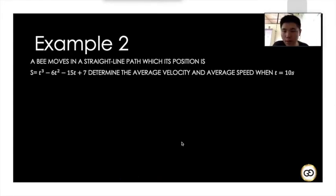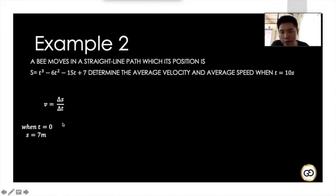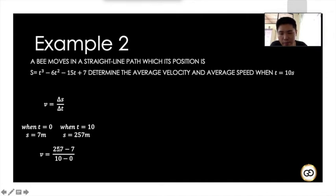Now let's look at another example — you can pause and try it yourself first. A body B moves in a straight line with position s = t³ - 6t² - 15t + 7. Determine the average velocity and average speed when t = 10 s. Substituting t = 0 gives 7 m; substituting t = 10 gives 257 m. Average velocity = (257 - 7) / 10 = 25 m/s.